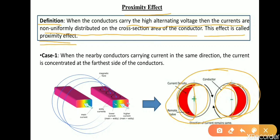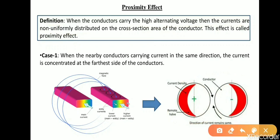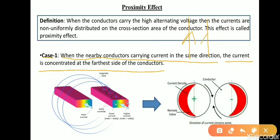Let's see how and why it happens. Case 1: when nearby conductors carry current in the same direction, the current is concentrated at the furthest side of the conductor. If both conductors carry current in the same direction, there will be a force of attraction between these two conductors.